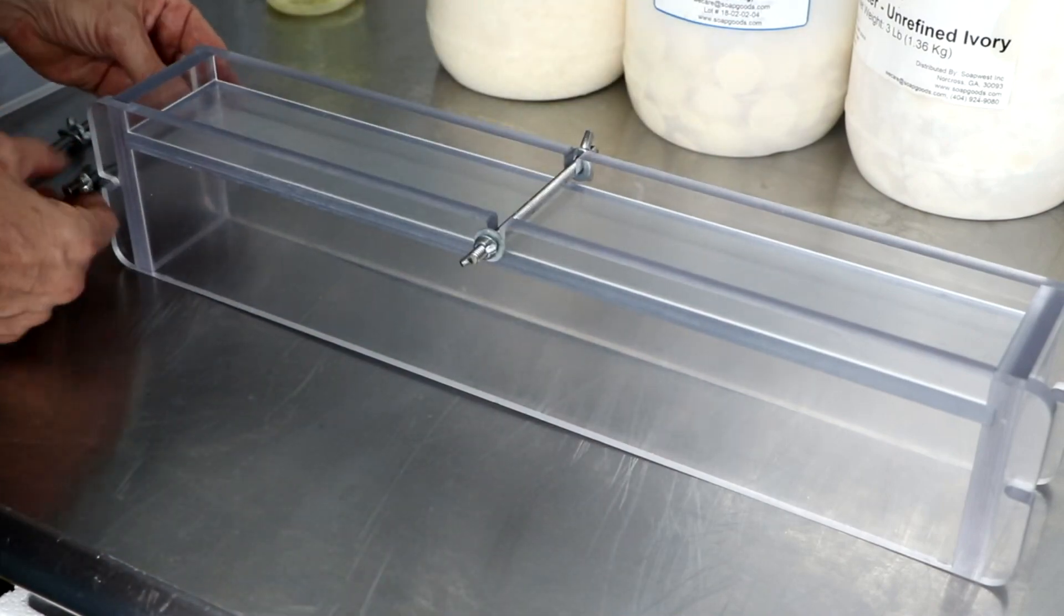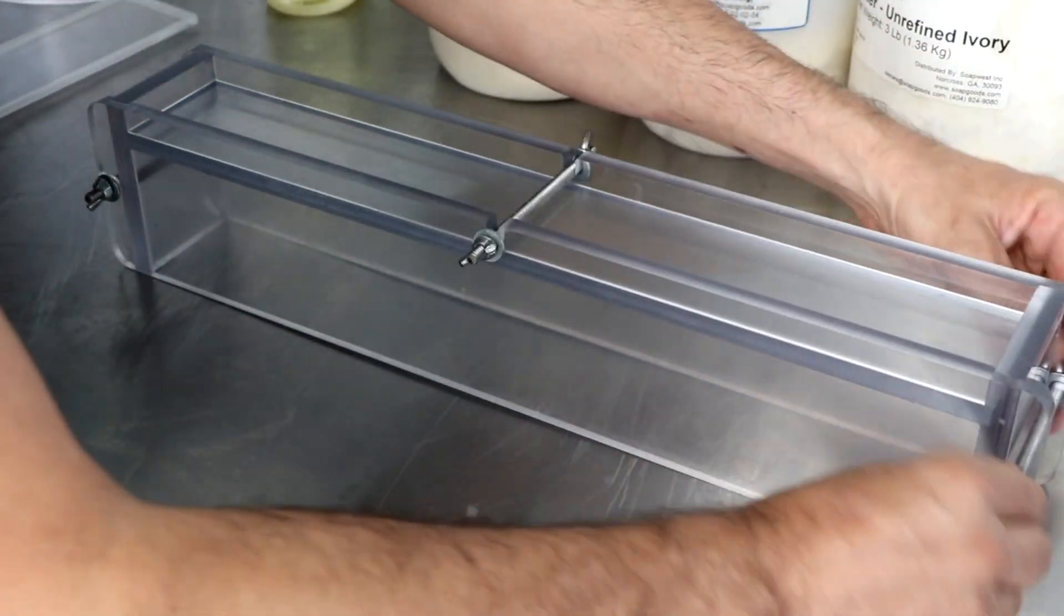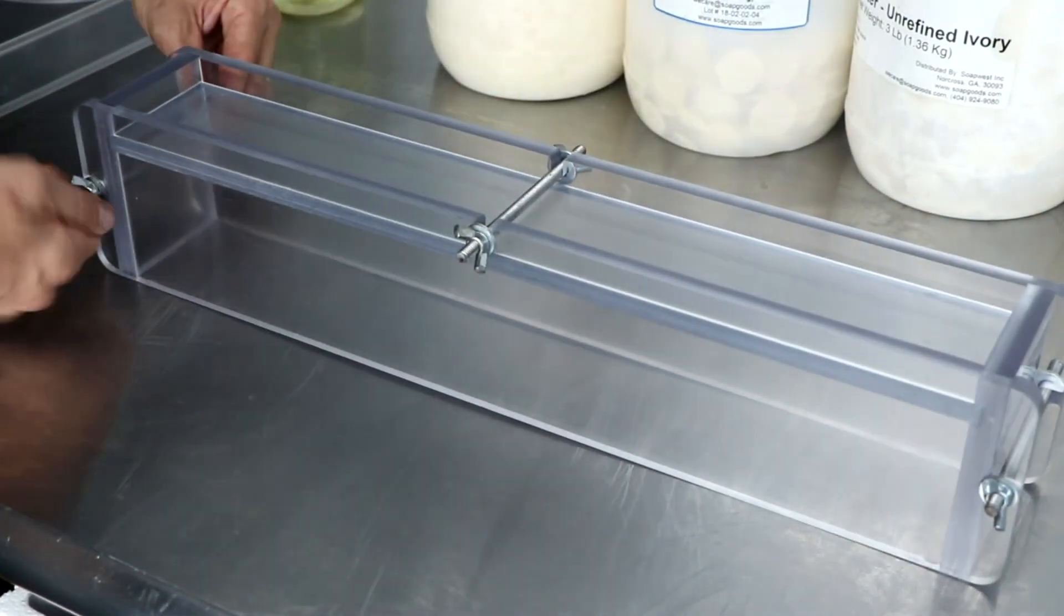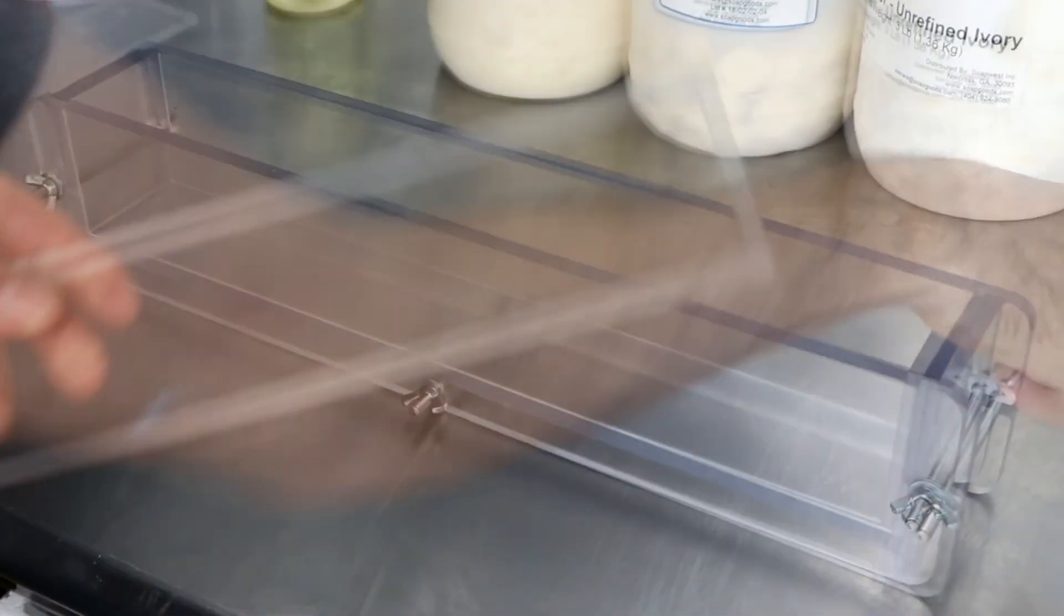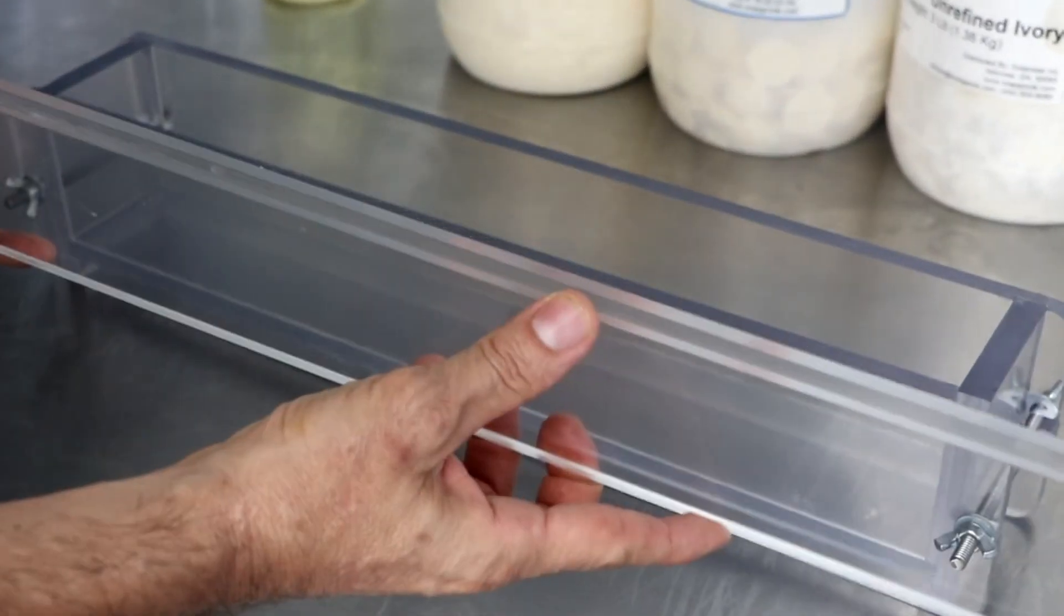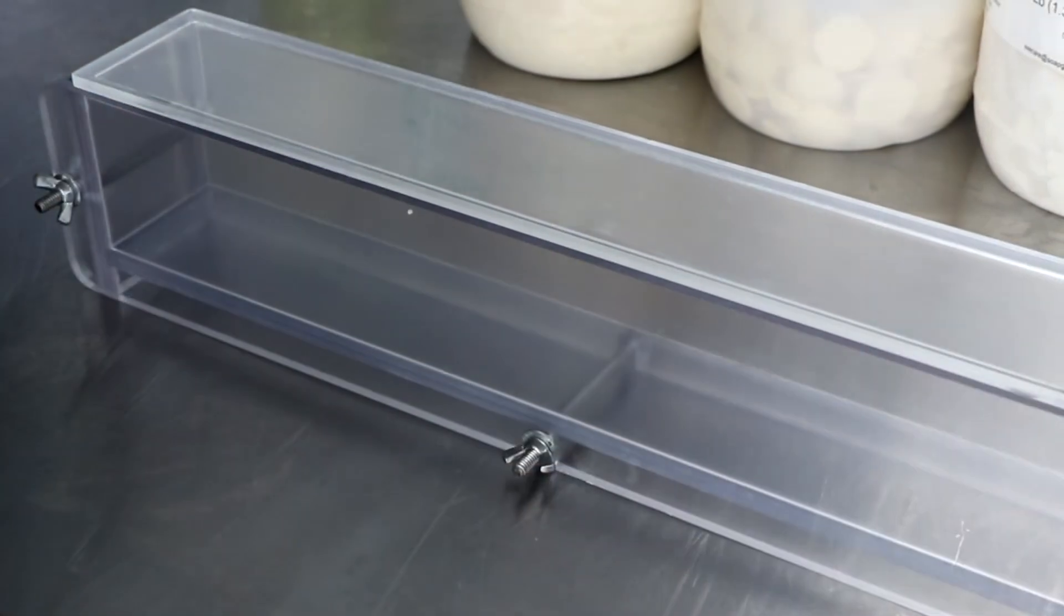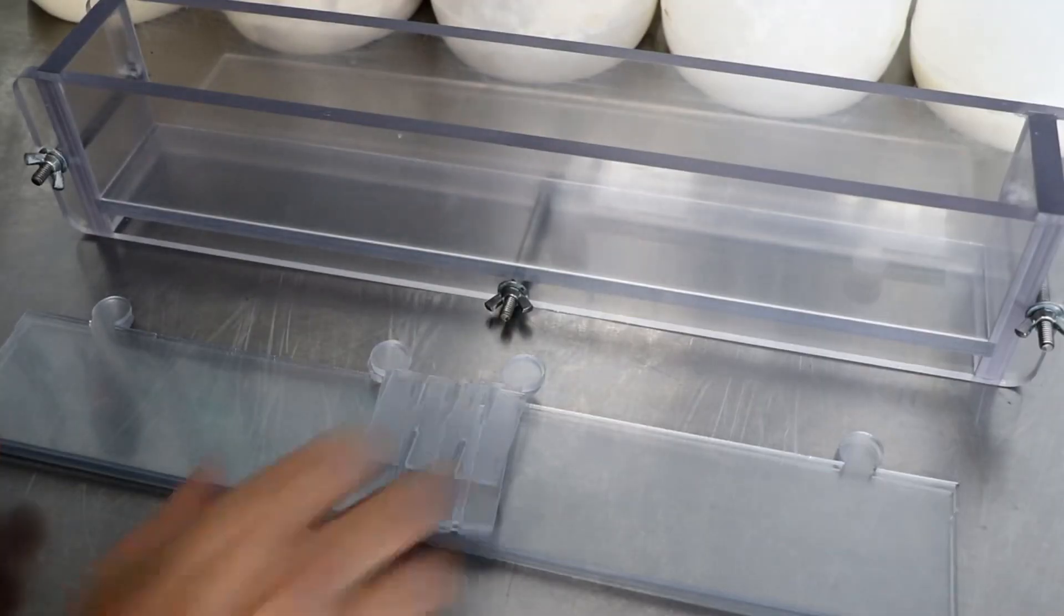Every single cut was precisely made to where there's nothing bigger, loose, or smaller, and it all fits perfectly together, which is really neat. I really like the transparent aspect of this particular mold because it allows me to see what I'm doing when I'm making some of my particular landscape design soaps.